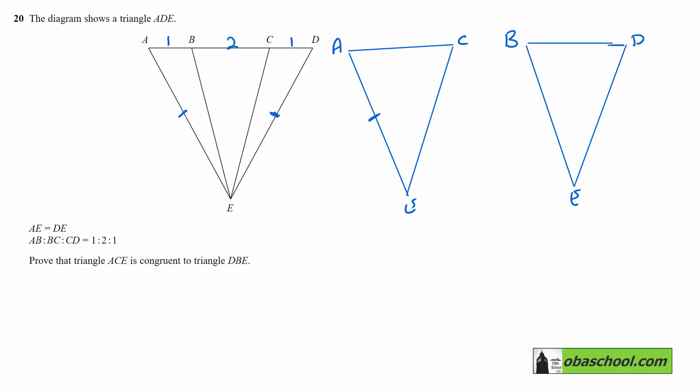AE is equal to DE. And A to C is 3 units. And B to D is 3 units. So in other words, this one and this one are the same length.